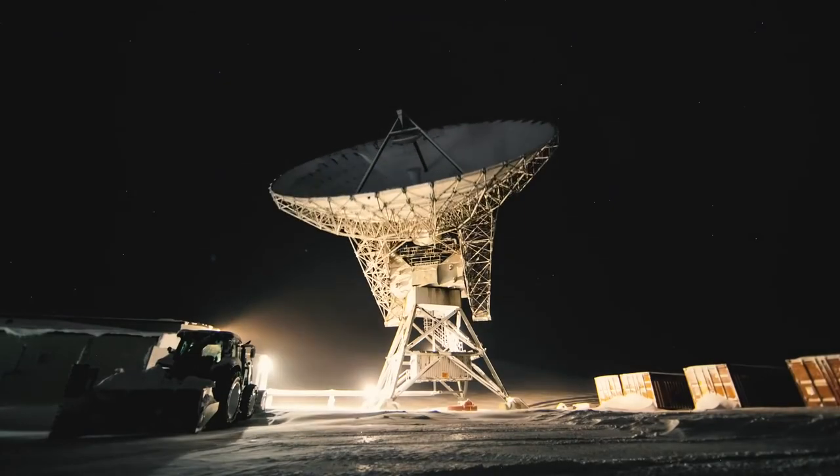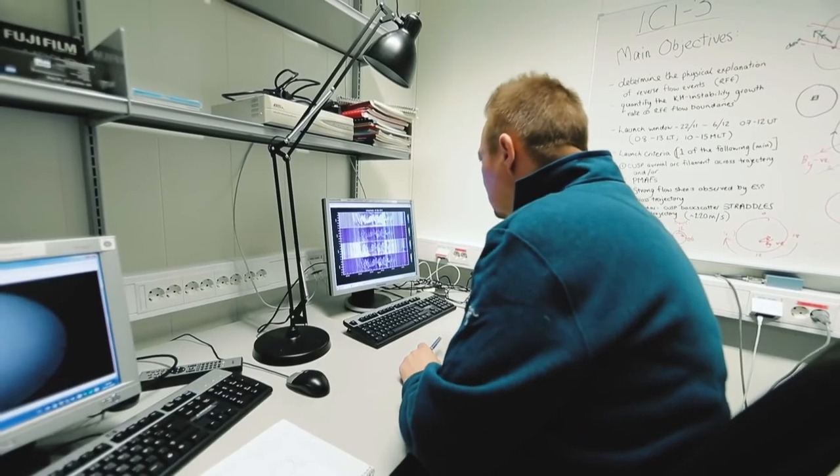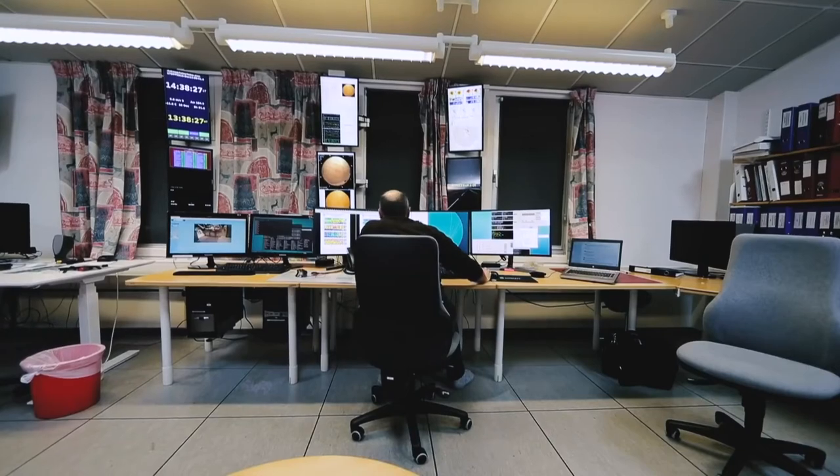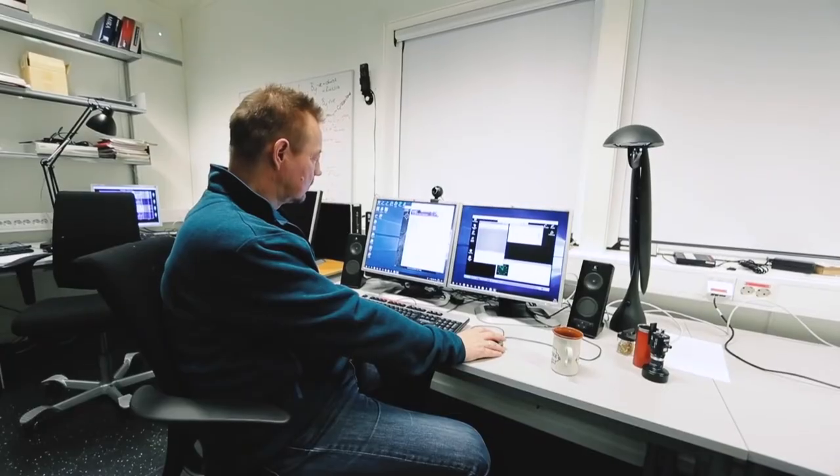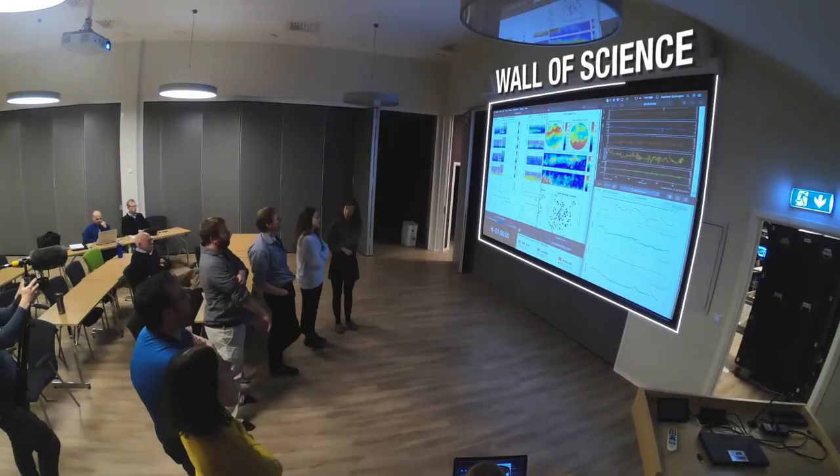This is our sport, to chase the aurora. Working with them is the EISCAT Radar and Kjell Henriksen Observatory. They have additional instruments to find the aurora. Sometimes it's cloudy, so we use radars to track the cusp. We can give advice that this is the right type of aurora. This is the wall of science. It's really an incredible experience.